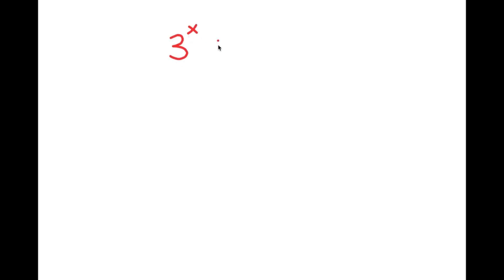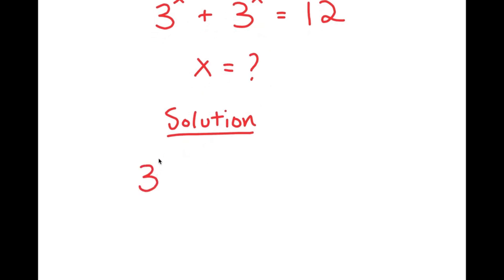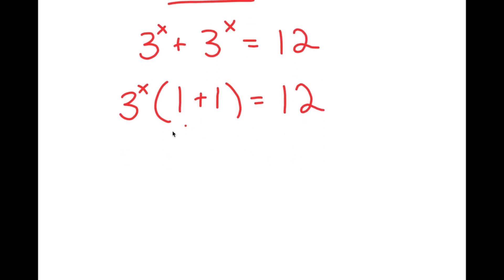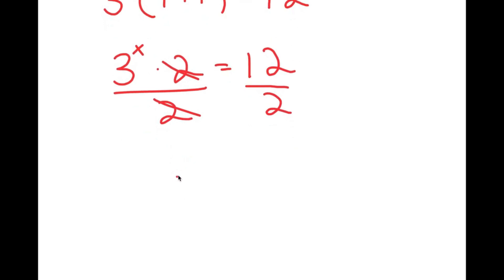In this next problem, I'm going to be solving the equation 3 to the power of x plus 3 to the power of x is equal to 12. My only variable is x, so that's what I'm solving for. The first thing I'll do is factor out 3^x from the left-hand side. So I get 3^x times (1 plus 1) equals 12, and 1 plus 1 is 2, so 3^x times 2 equals 12. Dividing both sides by 2 gives 3^x equals 6.